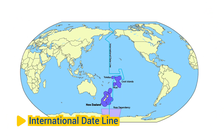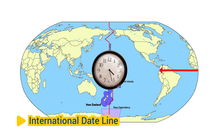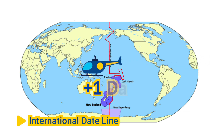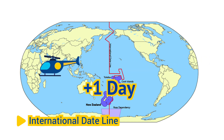International Dateline: The International Dateline is an imaginary line located at approximately 180 degrees longitude, opposite the prime meridian. It marks the transition between calendar days, with each day beginning to the east of the line. Crossing the International Dateline results in a change of one calendar day.